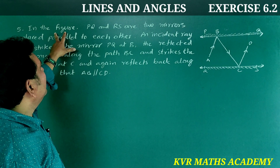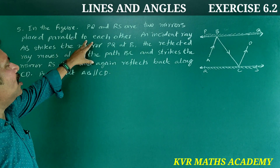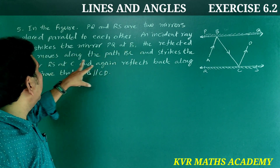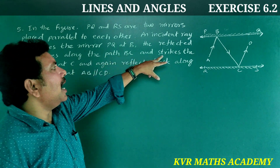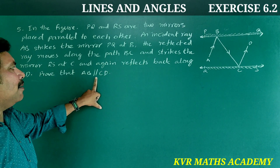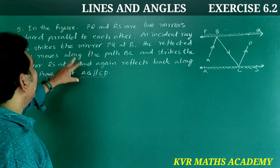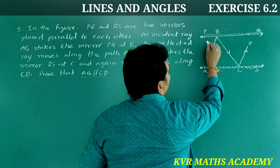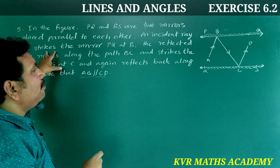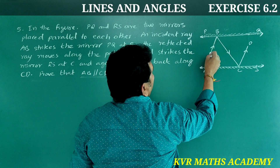Next, the 5th question — this is the final question in this chapter. In the figure, PQ and RS are two mirrors placed parallel to each other. An incident ray AB strikes the mirror PQ at B. The reflected ray moves along the path BC and strikes the mirror RS at C, and again reflects back along CD. Prove that AB is parallel to CD.